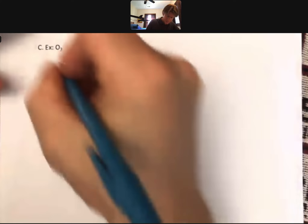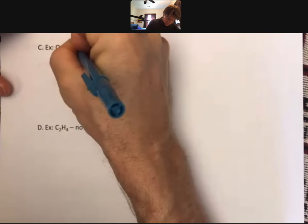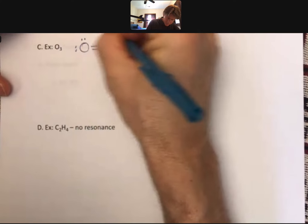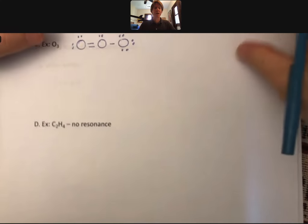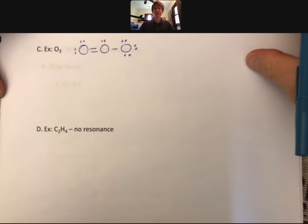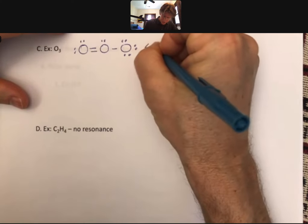I've already done the Lewis structure for ozone. It's in your notes. It looks like that. You're going to draw the one other resonance structure with your resonance arrow right here.